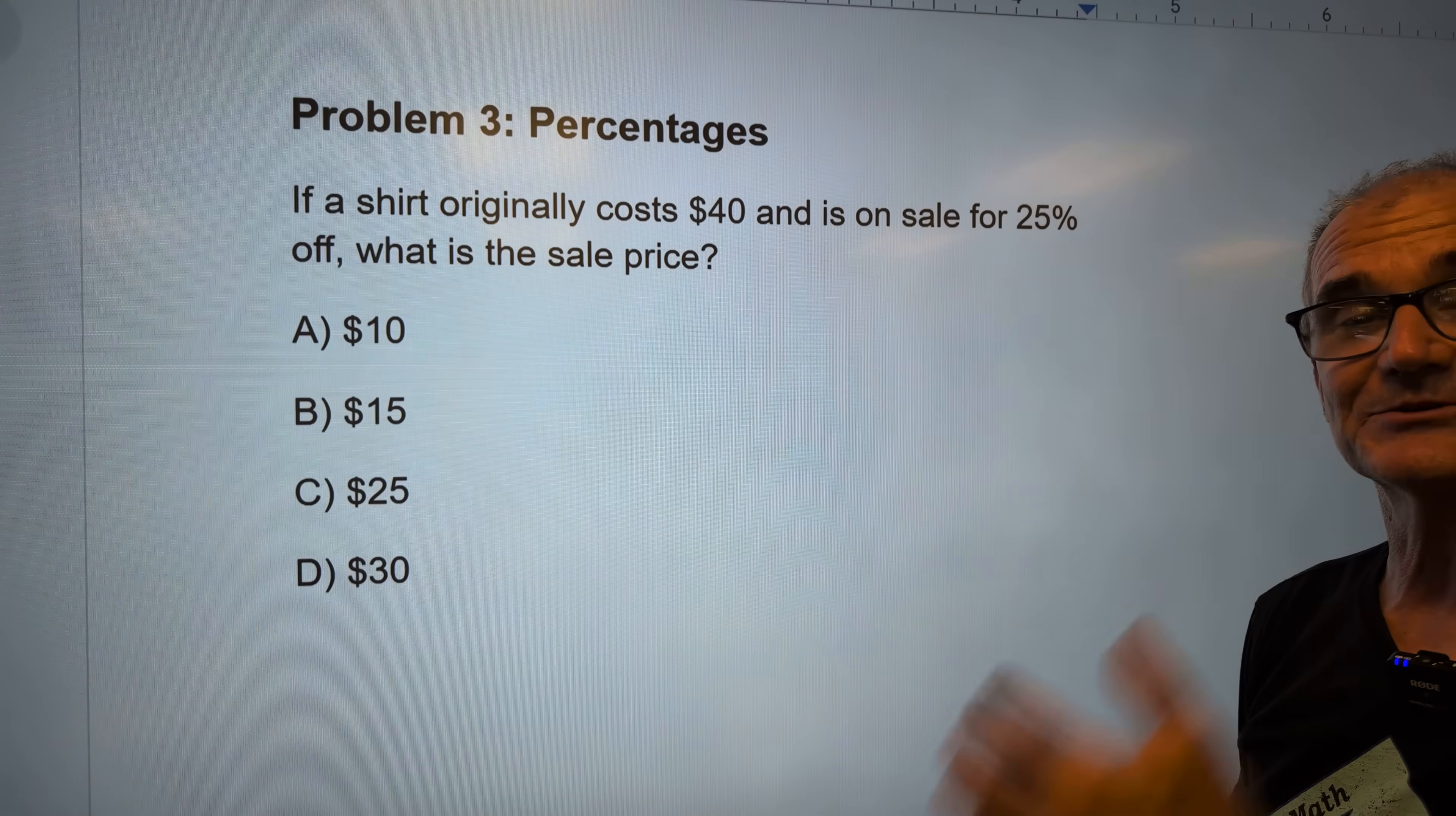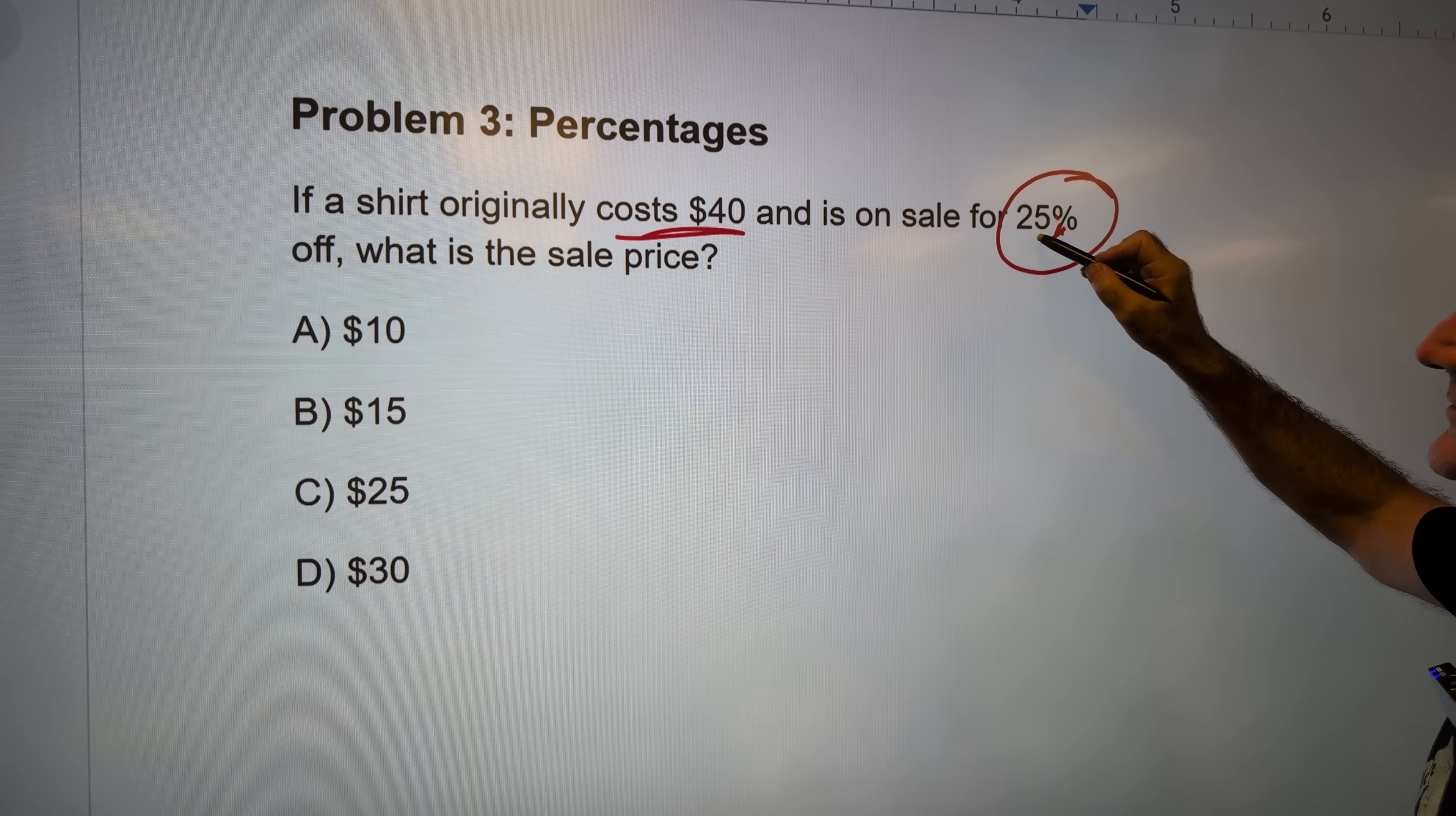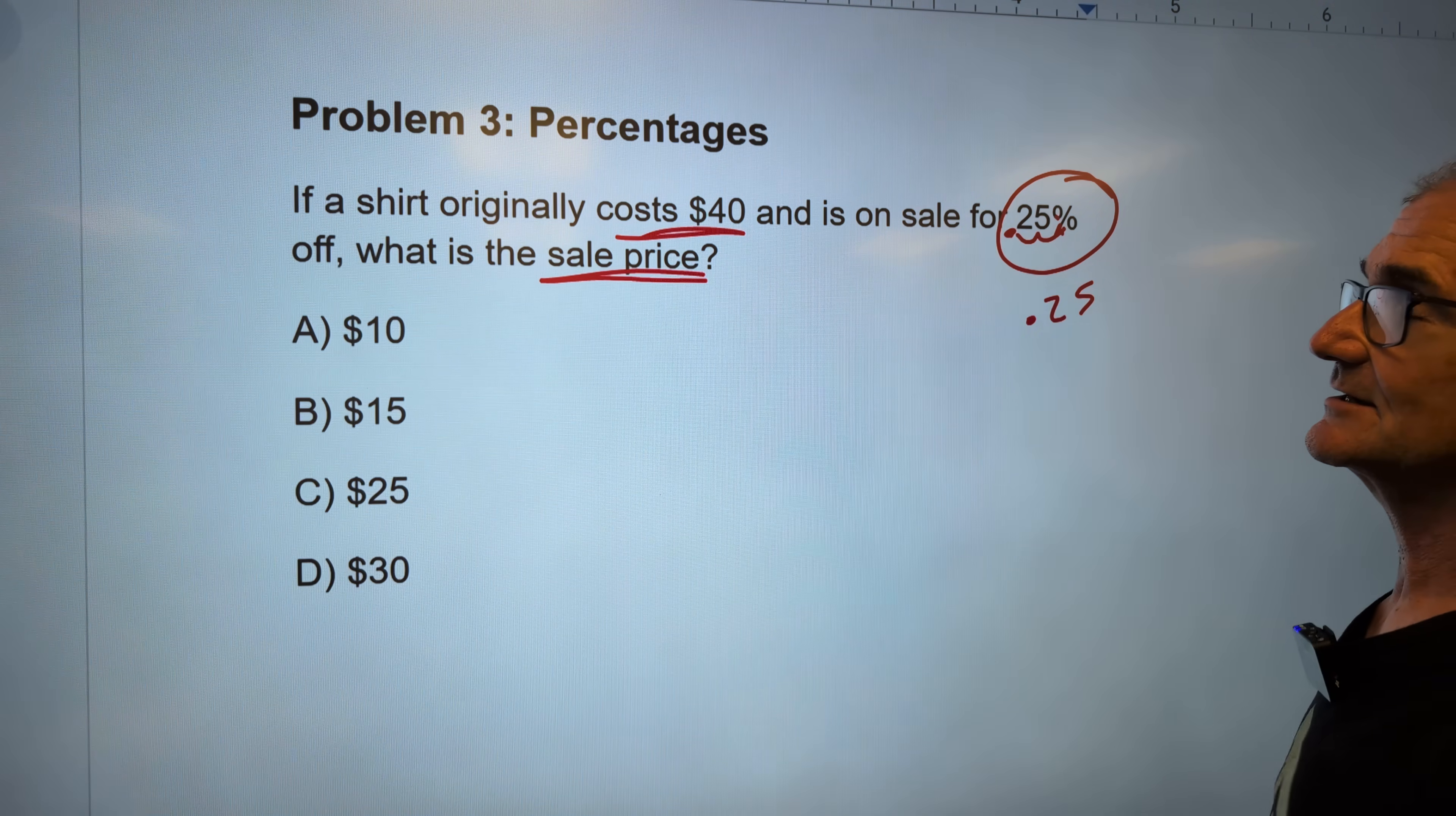These aren't too hard, but you got to review to make sure you bring these things back. So a shirt originally cost 40 bucks and is on sale for 25 percent off. I think of that percent as like a little arrow here. Same goes over one, two. So that 25 percent is 0.25 as a decimal. What is the sale price? This important thing. So I don't want to find the discount. I want to find the sale price.